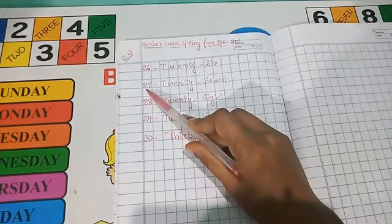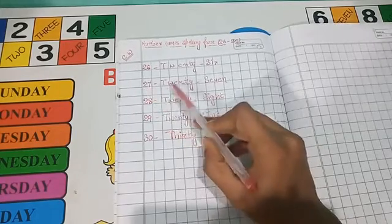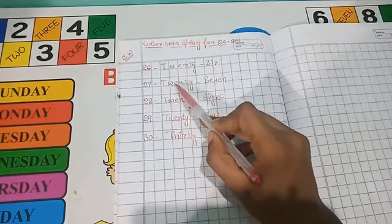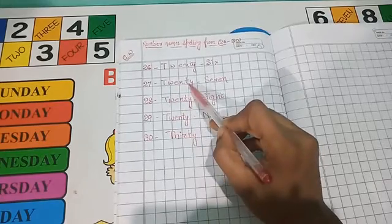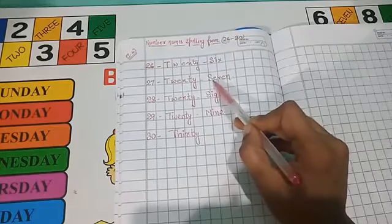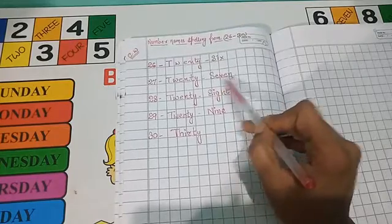Number 27. Spelling, see, T-W-E-N-T-Y, 27, S-E-V-E-N, 27.